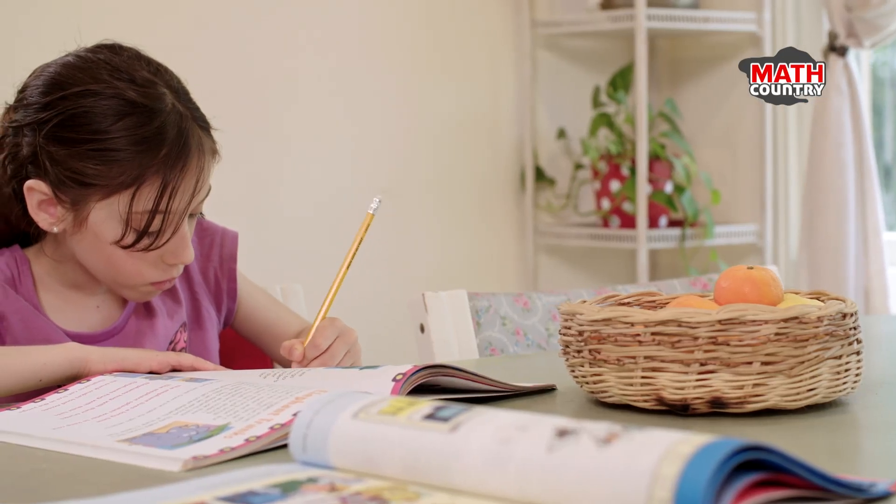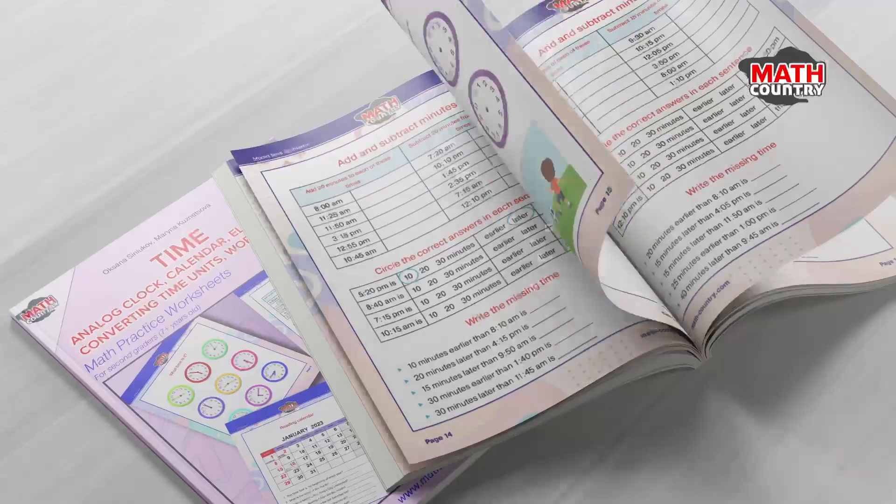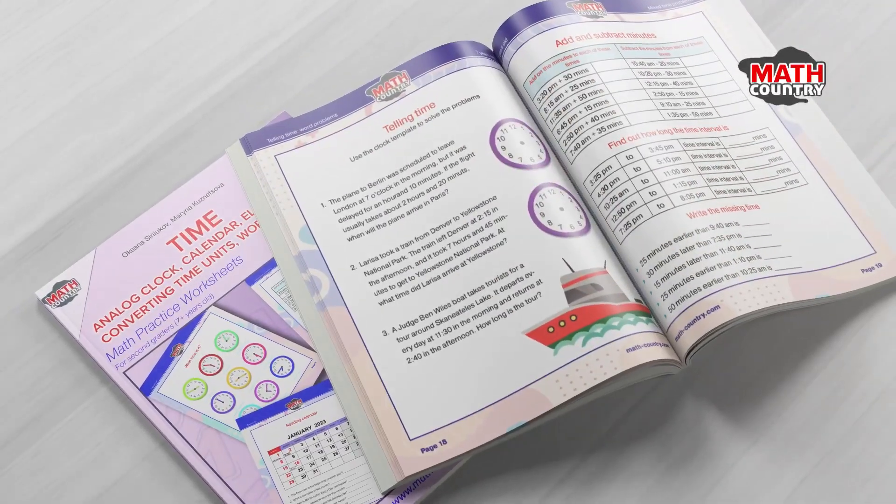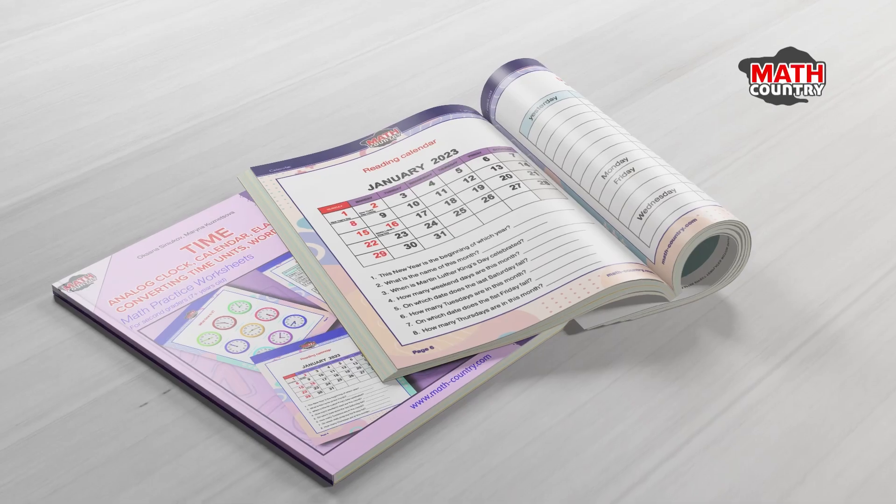Can your child tell the time? With the book Time and Analog Clock, young explorers quickly learn to read time on analog clocks, position the hour and minute hands correctly, and easily navigate through the calendar.